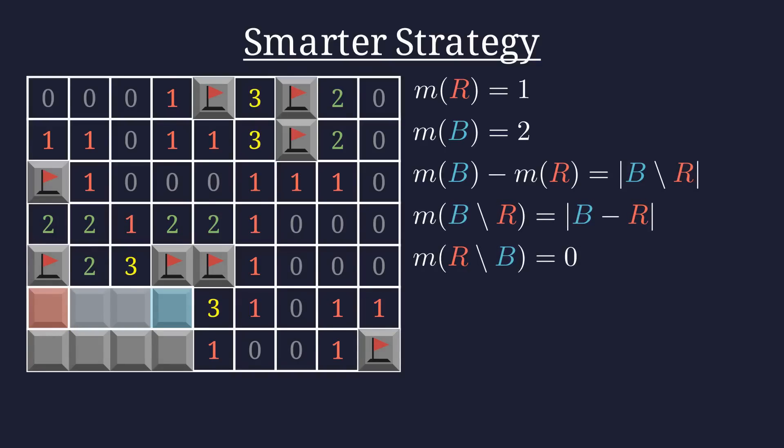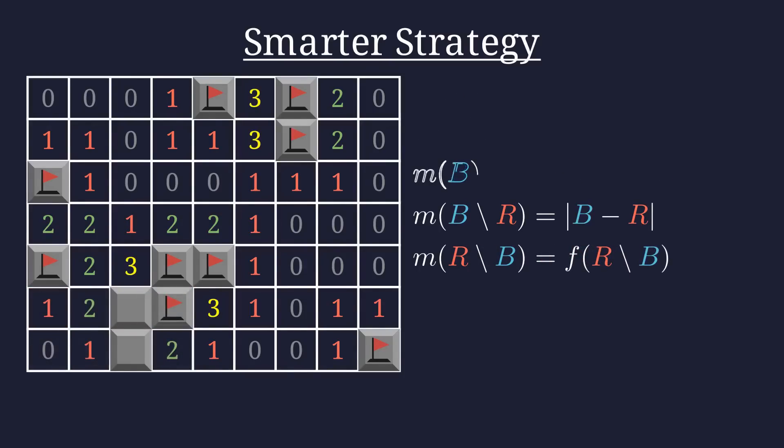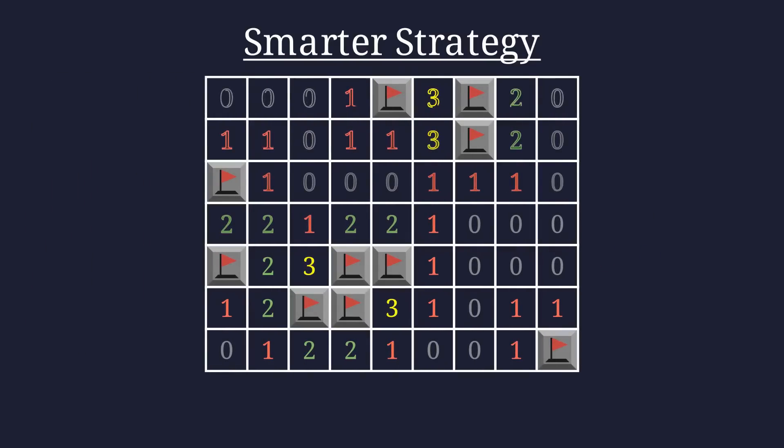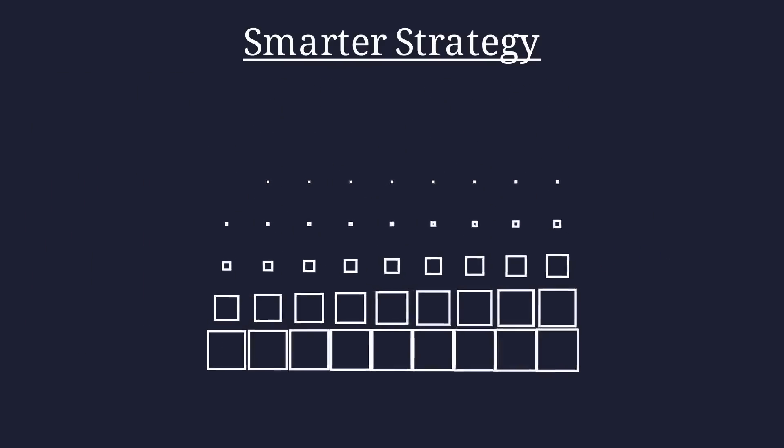As we ignored all the flags, we know the flag count in R set minus B is zero, so it all lines up with our two simpler strategies. That may seem a bit complicated, so let's look over everything we've worked out.